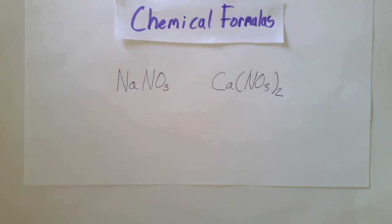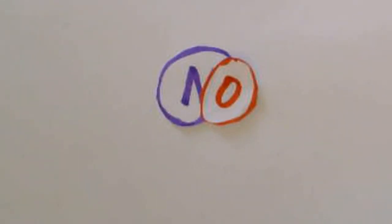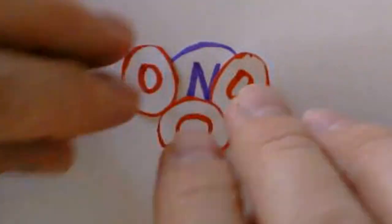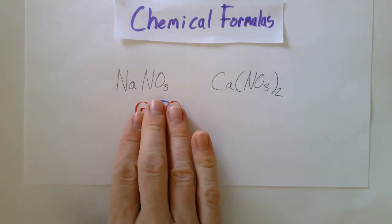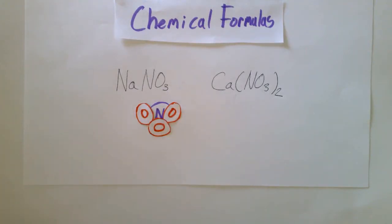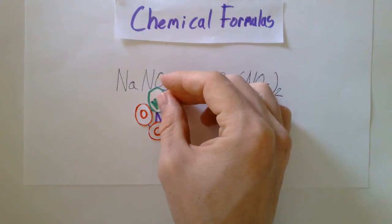So there are some compounds that contain polyatomic ions. Now polyatomic ions are like a packet of atoms that often come together. So one example of these is nitrate. And so here we've got nitrogen and three oxygens. We call this nitrate. And that's a packet of atoms that often come together. We've got it over here in sodium nitrate. You've got sodium with the nitrate.